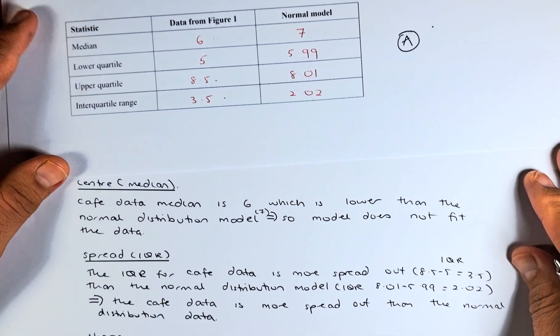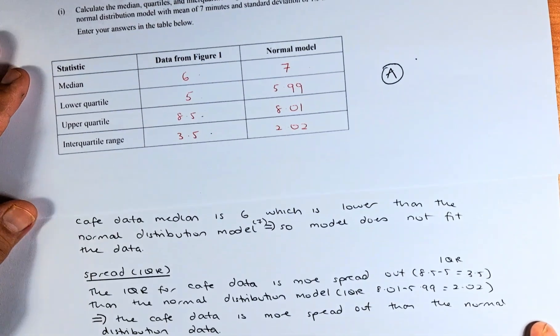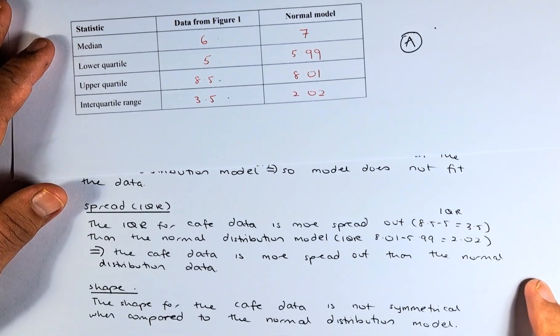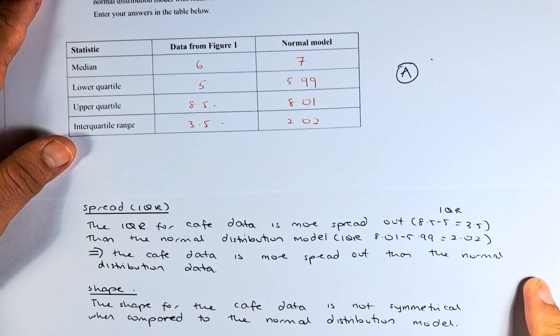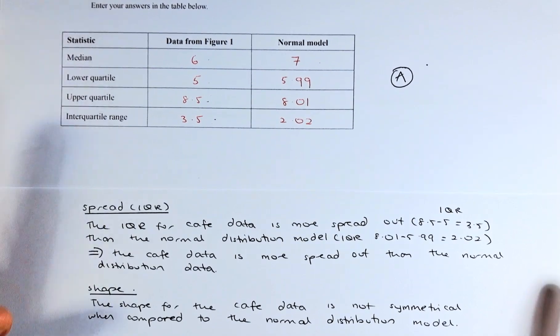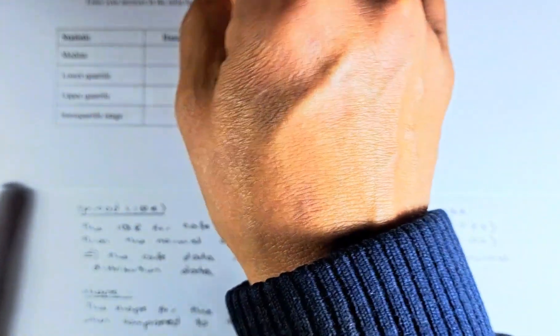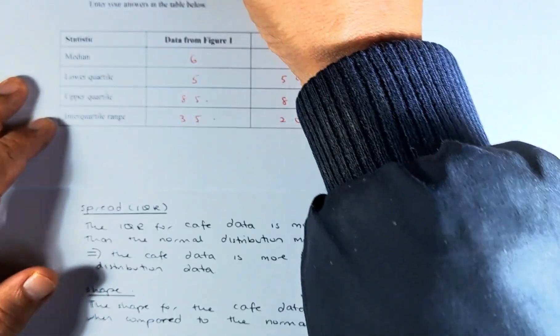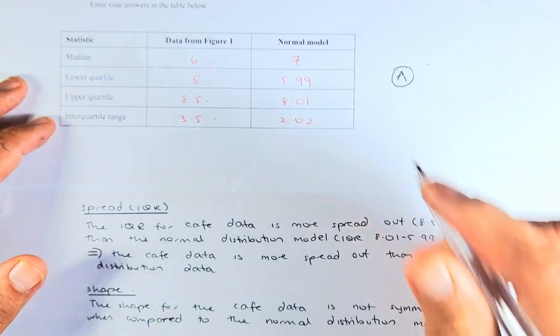And last but not least, we are looking at the shape of the distribution. If you look at the shape, the cafe data is not symmetrical. If it is symmetrical, it will be right in the middle here. But it is not.